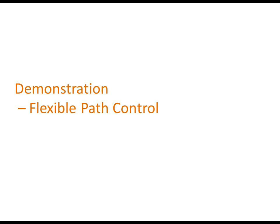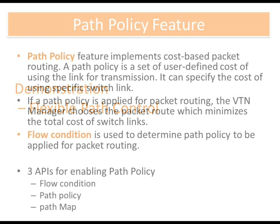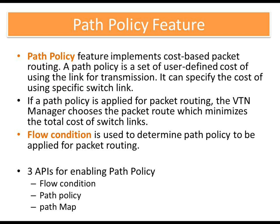The second demonstration is the path policy feature supported in VTN. Using this feature, the user can control the paths taken by traffic data flows in the OpenFlow network. Path policy feature implements cost-based packet routing. A path policy is a set of user-defined costs for using links for transmission. It can specify the cost of using a specific switch link. If a path policy is applied for packet routing, the VTN Manager chooses the packet route which minimizes the total cost of switch links. Flow condition is used to determine which path policy is applied for packet routing.